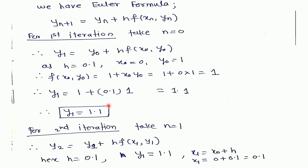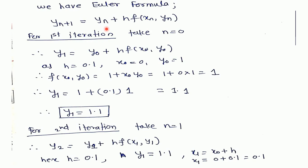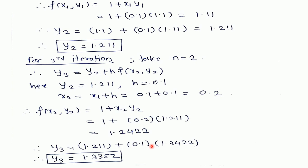For the second iteration we take n = 1, giving y₂ = y₁ + h · f(x₁, y₁). Here h = 0.1 and y₁ = 1.1 from the last iteration. We calculate x₁ = x₀ + h = 0 + 0.1 = 0.1. Then f(x₁, y₁) = 1 + x₁ · y₁ = 1 + 0.1 × 1.1 = 1.11. Substituting all values gives y₂ = 1.211, which is the solution at point x₂.